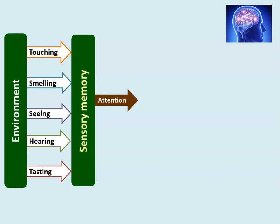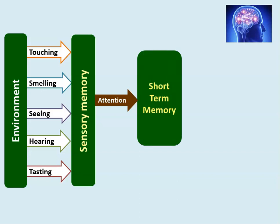The sensory memory stores information only for a few seconds — a short span of time. Then the information is sent to the short-term memory. In fact, the sensory memory is bombarded with information from all five senses, receiving millions of pieces of information per second. However, not everything goes to the memory. Only when we focus on valuable, important information does it go to the short-term memory.